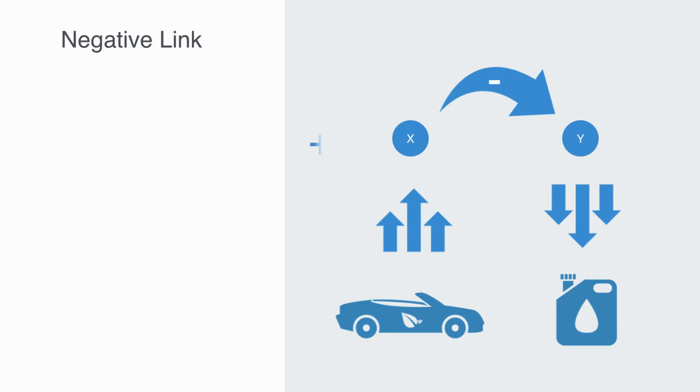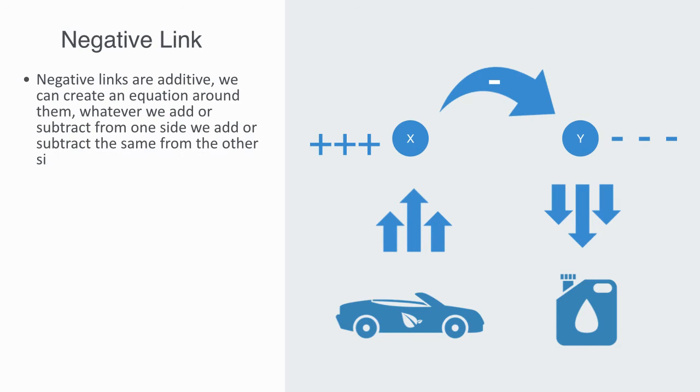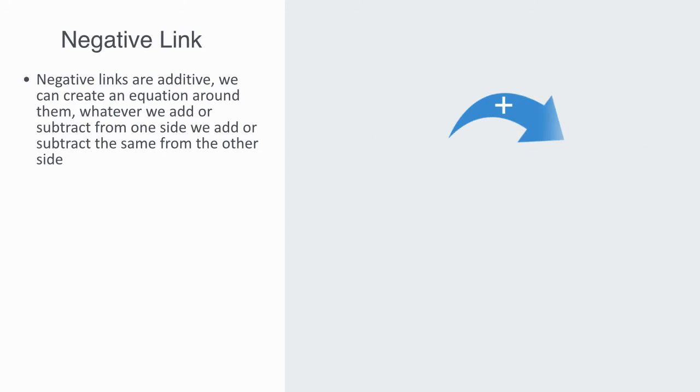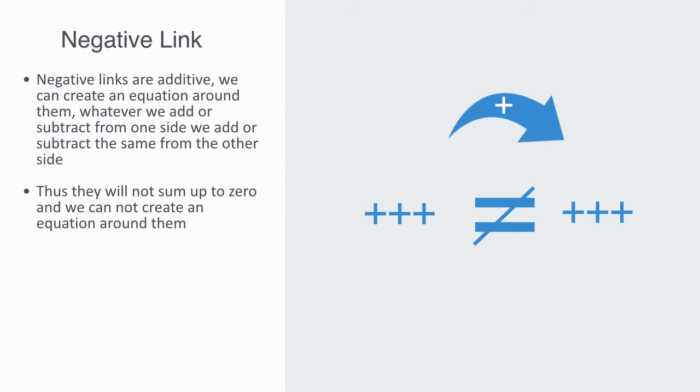Negative links are additive. Thus, as we previously discussed, we can create an equation around them. Whatever we add or subtract from one side, we add or subtract from the other. Positive links, in contrast, are non-additive. When we add or subtract from one element, we also add or subtract from the other. Thus, they will not sum up to zero. And we cannot create a closed form equation around them. They will give us non-linear solutions.